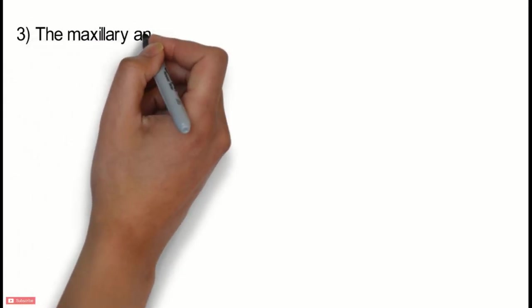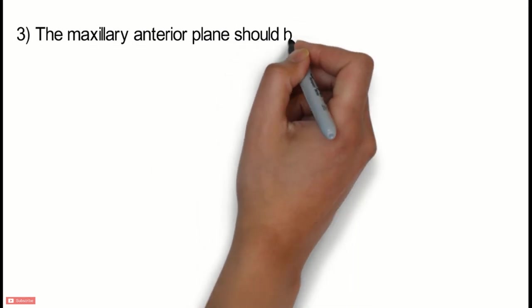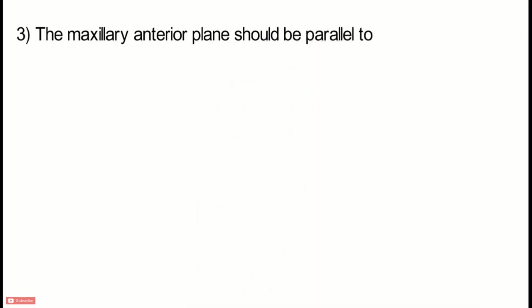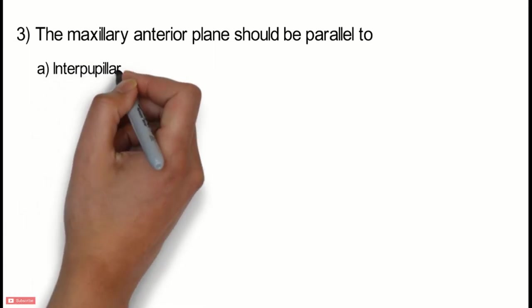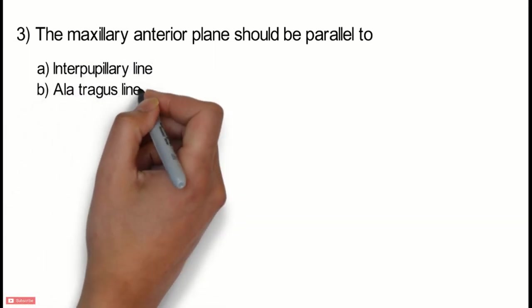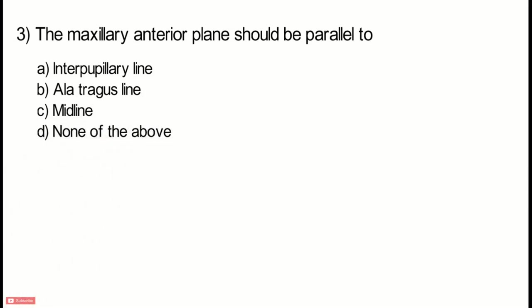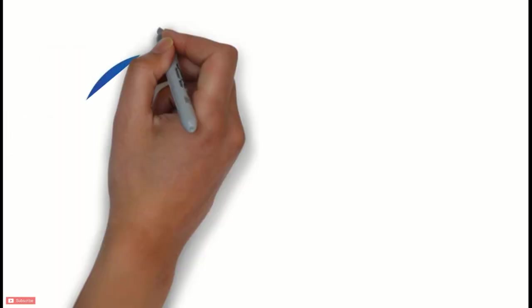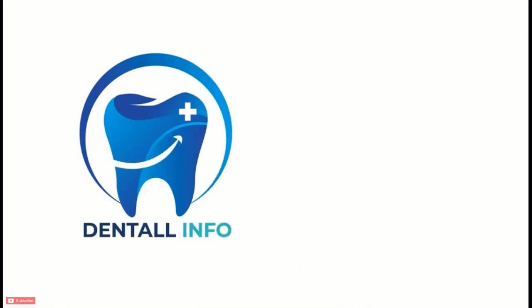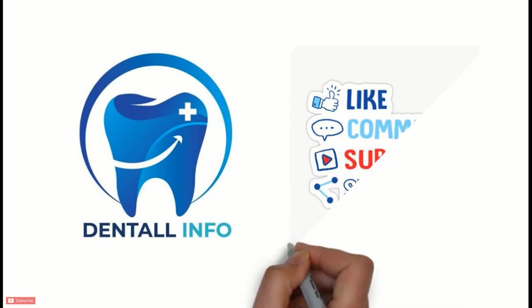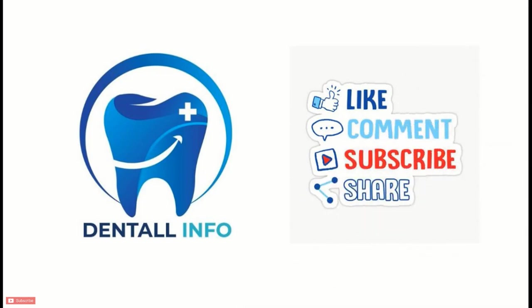Question 3: The maxillary anterior plane should be parallel to — Option A: Interpupillary line; Option B: Ala-tragus line; Option C: Midline; Option D: None of the above. Take your time to answer these questions. You can later verify your answers by checking in the description section below. Please like, comment, and subscribe to this channel to learn about various dental topics. You can also ask us any questions or give suggestions in the comment section below.